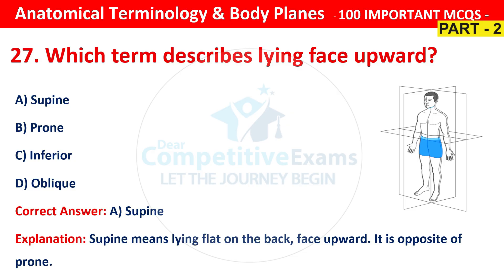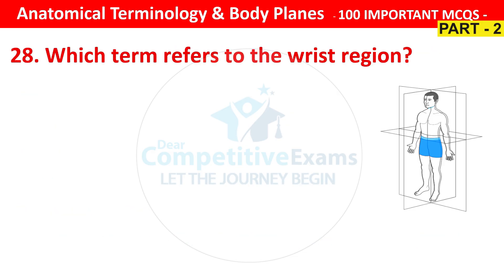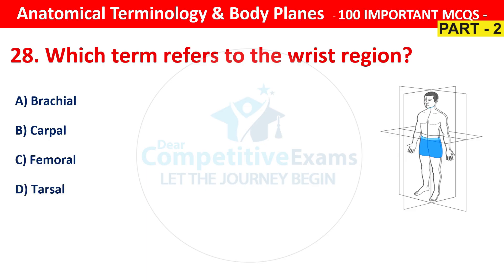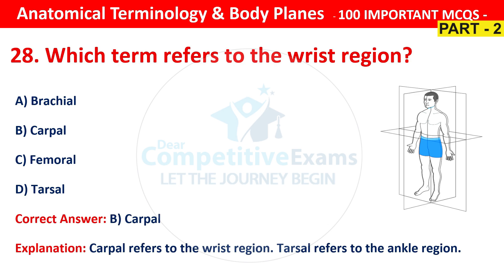Question number 28. Which term refers to the wrist region? Your options are brachial, carpal, femoral or tarsal. The right answer is B, that is carpal. Carpal refers to the wrist region and tarsal refers to the ankle region.